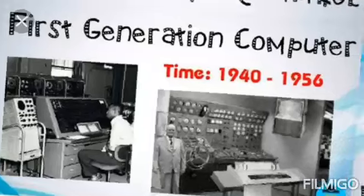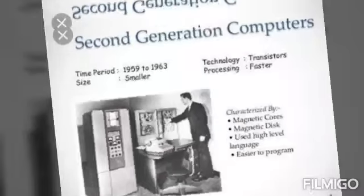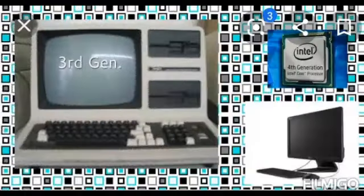Next one is 2nd generation computers. Time period 1959 to 1963. It was small in size. Transistors are used. It works faster, is more reliable, and less heat is generated in this computer.